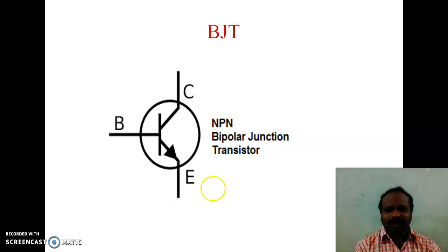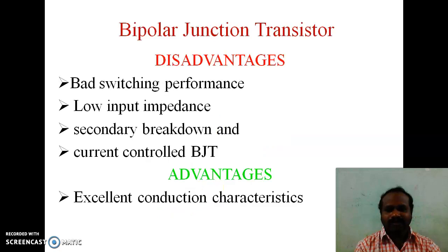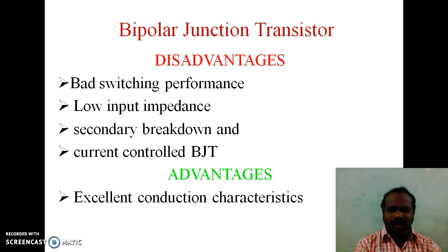This is the symbol of BJT. Disadvantages of BJT: bad switching performance, low input impedance, secondary breakdown, and BJT is a current controlled device. Advantages of BJT: it has excellent conduction characteristics.